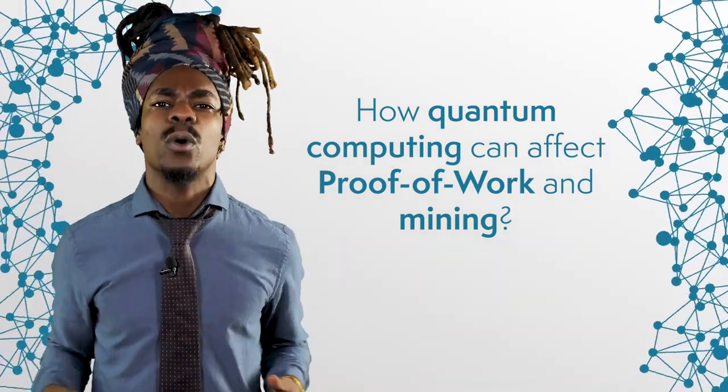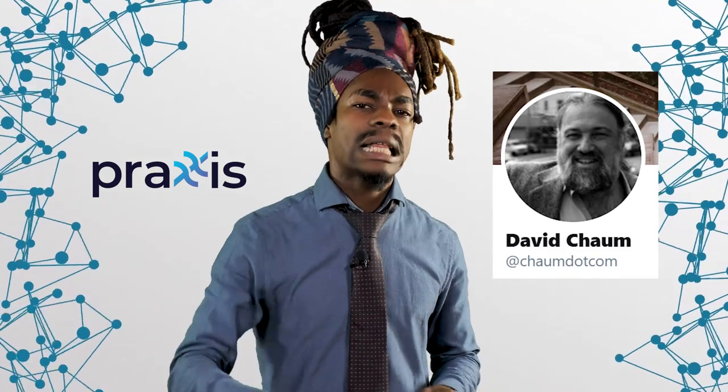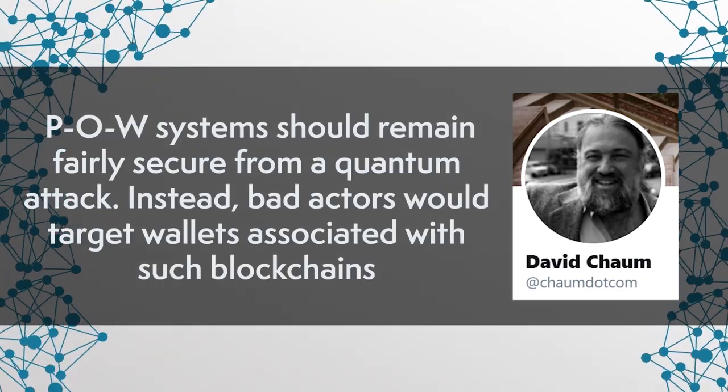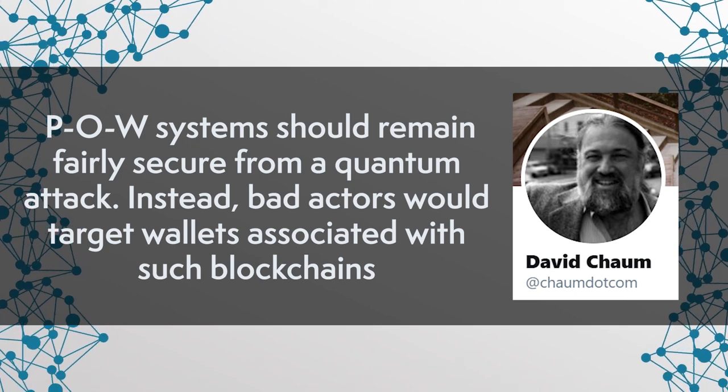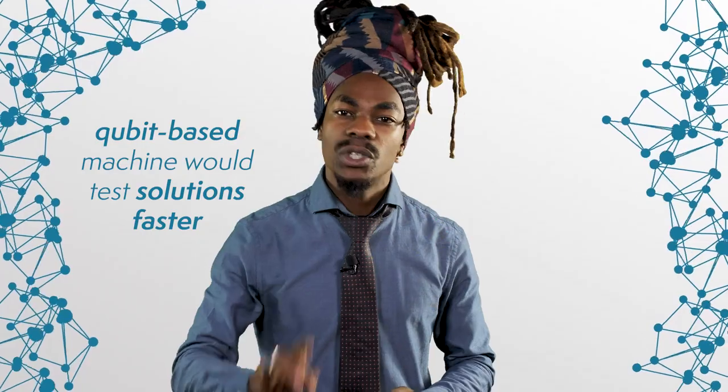The question that remains is whether such computing power can have influence on proof-of-work systems and mining in general. David Chaum, one of the pioneers of digital cash and developer of Praxis, an allegedly quantum-resistant blockchain, claims that POW systems would remain fairly secure from a quantum attack, and that bad actors would instead target wallets associated with such blockchains. Inside a Bitcoin network, miners test various inputs that produce a hash. A qubit-based machine should be able to test multiple solutions at once, resulting in much faster solutions, which could technically enable a 51% attack.